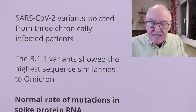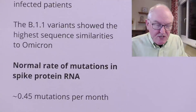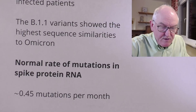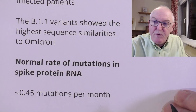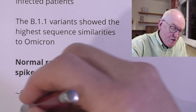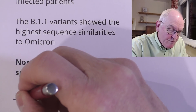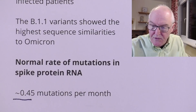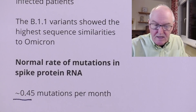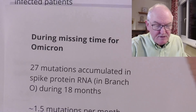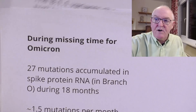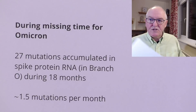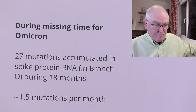Another interesting thing is how quickly mutations occur. The normal rate of mutations in the spike protein RNA is about 0.5 mutations per month. But during the missing time for Omicron, 27 mutations accumulated in the spike protein.